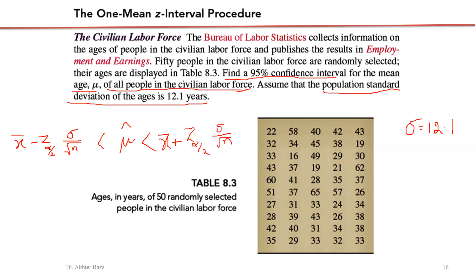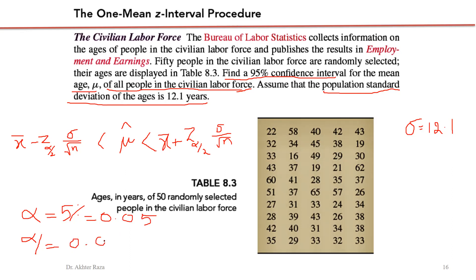What is alpha in this case? Alpha is given as 5% because we have a 95% confidence interval. If the confidence interval were 90%, then alpha would be 10%. So the confidence level is 95%, and the level of significance alpha is 5%. Alpha by 2 is 0.05 divided by 2, which gives 0.025.